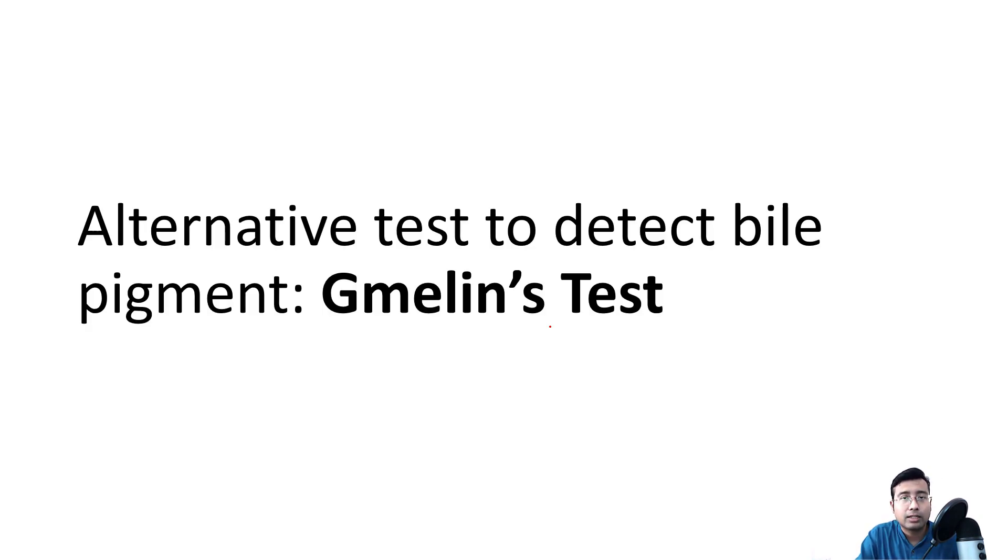The alternative test for Fouchet's test to test bile pigments is known as Gmelin's test. G is silent. It is not G Melin. It is Gmelin's test. So test for bile salt, Hay's sulphur test. Test for bile pigments, Fouchet's test.